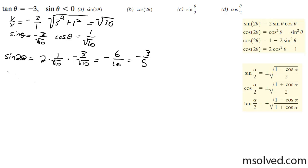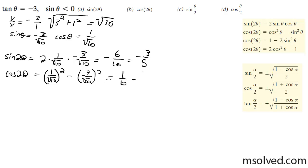For the double angle of the cosine, we take cosine squared minus sine squared: 1 over the square root of 10 squared minus negative 3 over the square root of 10 squared, which is 1 over 10 minus 9 over 10, equal to negative 8 over 10, simplified to negative 4 over 5.